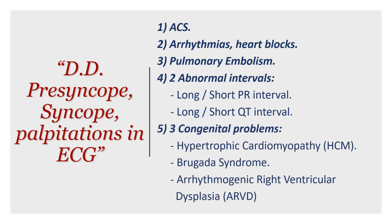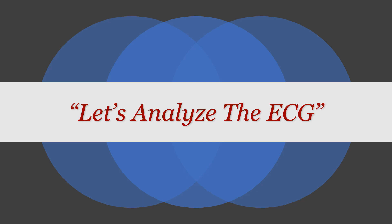Then you'll be left with three congenital problems to think about: hypertrophic cardiomyopathy, Brugada syndrome, and arrhythmogenic right ventricular dysplasia. That is the full differential diagnosis you should consider when analysing an ECG for a patient presenting with syncope. Now let's go back to our ECG and analyse it to find out which condition this was.